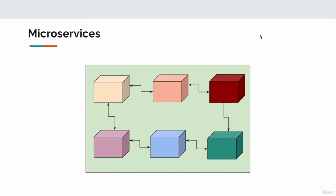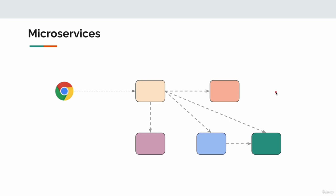Let's get started. In our microservices architecture, we will have multiple services talking to one another. This is the order service. When someone places an order, it will accept the request, immediately call the payment service to deduct payment, call the inventory service to deduct inventory, then call the notification service to send the email. We do all these communications synchronously.